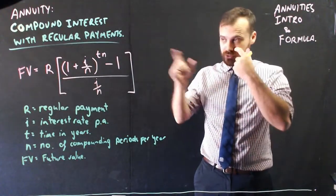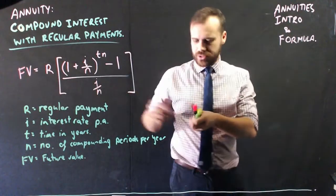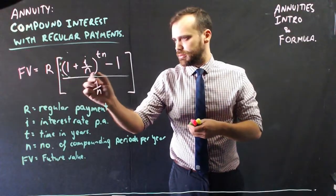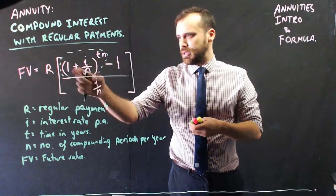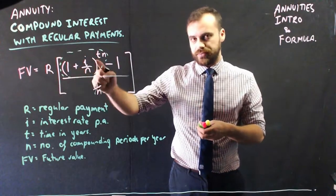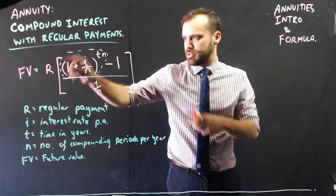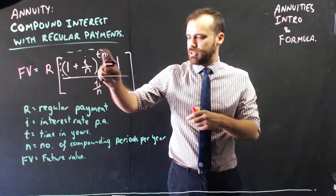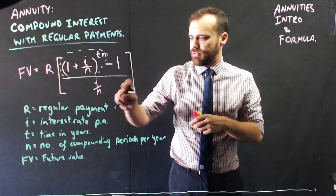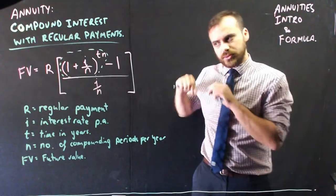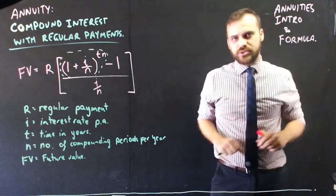You might, if you're looking really closely at that, note that sort of this bit in here is the compound interest formula. So really it says future value is equal to regular payments times the compound interest formula minus 1 over interest rate divided by n. Okay, so let's use it to do something.